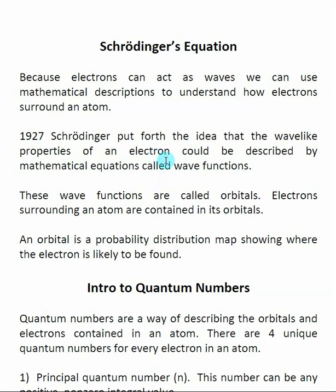From Schrödinger's equation, electrons can only occupy very specific spaces around a particular atom, and these wave functions — called orbitals — describe that. Electrons surrounding an atom are contained in these defined probability spaces. These spaces have shapes and represent a probability distribution of where the electron is likely to be found — high probability inside the space, very low probability outside, but we can never truly know exactly where the electron is.